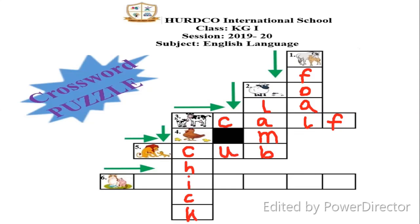Picture number six is a cat with her baby. A cat's baby is kitten, and the arrow is showing rightward, so we have to write kitten from left to right. K and I are already written, so we don't have to write those anymore.